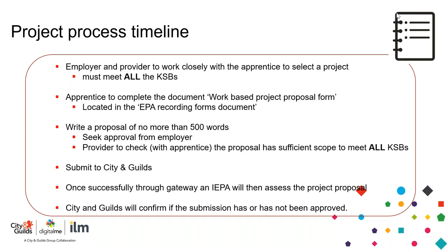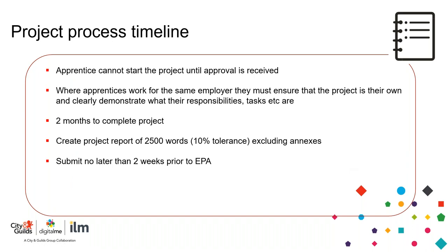If the project proposal has failed, you will receive feedback from the IEPA explaining why it's not appropriate. Take the feedback on board, amend, and resubmit. Only once the project proposal is accepted can the apprentice start the project. It's important to stress: if a project is started prior to the proposal being accepted, it will fail. Also, where the apprentice works for the same employer, the project must clearly demonstrate their own specific responsibilities and tasks. The apprentice only has two months to complete the project, which is why the size of the project matters.